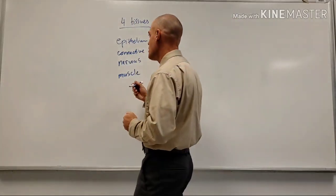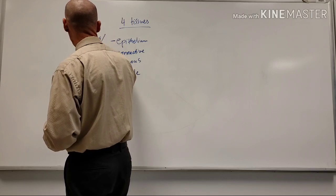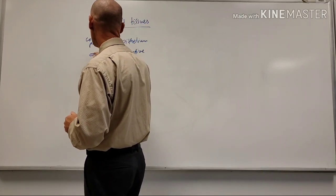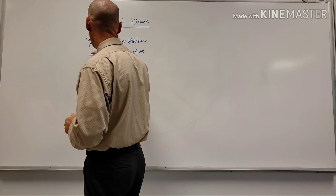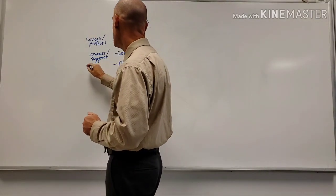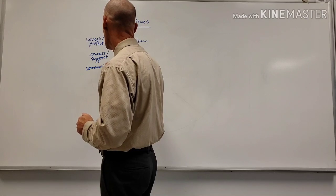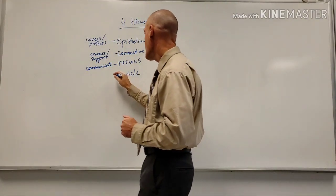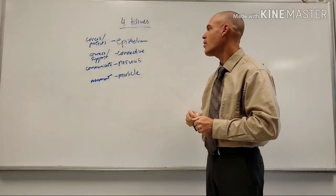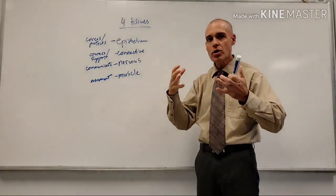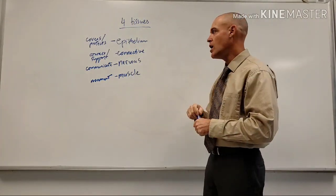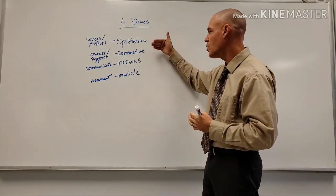Epithelium covers the body and protects. Connective tissue connects and supports organs. Nervous tissue is our communication tissue for the body. And muscle is there for movement. Very different functions and very different looking tissues - every single tissue in the body falls under one of these four main categories.